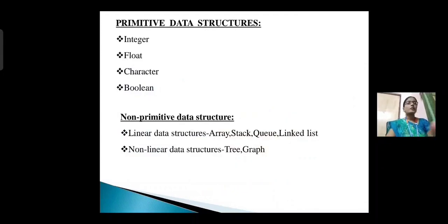First, primitive data structures. Primitive data structures are the basic data structures that directly operate upon the machine instructions. These data structures are used to represent single values and have different representations on different computers. They include integer, float, character, and boolean.